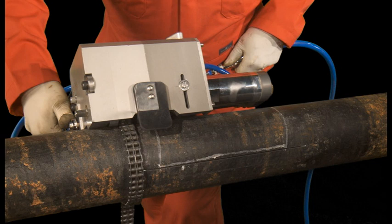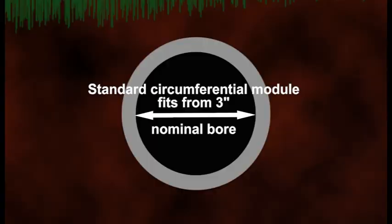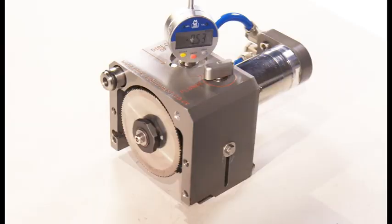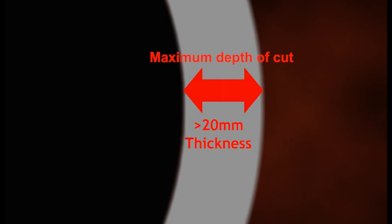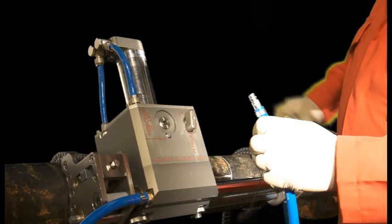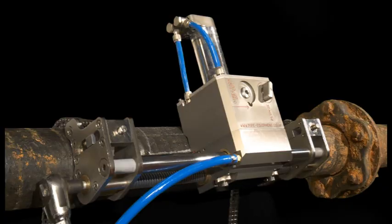The circumferential module allows cuts to be made partially or completely around the pipe. The standard circumferential module is suitable for pipe diameters from 3-inch nominal bore upwards. The cutter module consists of the air motor, non-sparking blade, and depth control. The maximum depth of cut is 20 millimeters.